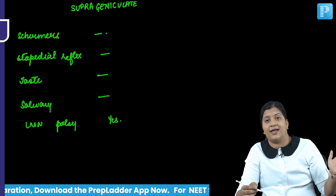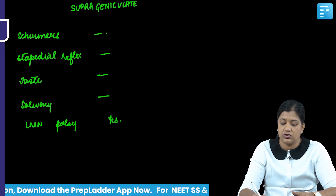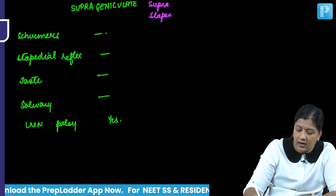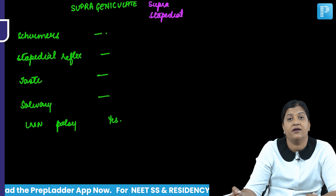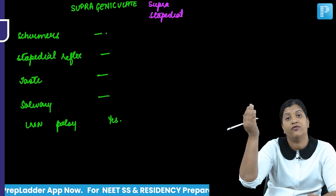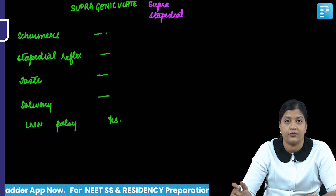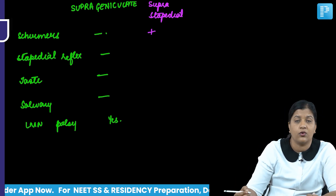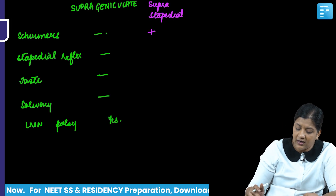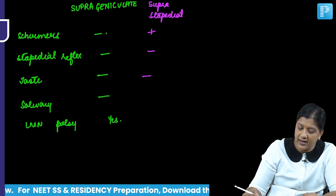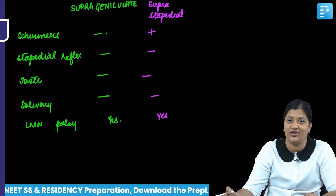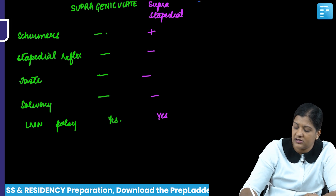If the lesion is supra-stapedial — above the nerve to stapedius — the greater superficial petrosal nerve is spared, so Schirmer's test will be preserved and lacrimation will be normal. However, the stapedial reflex will be lost, taste will be lost, salivary flow will be reduced, and there will be LMN-type facial palsy.